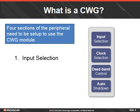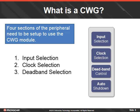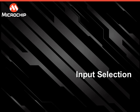Four sections of the peripheral need to be set up to use the CWG module: input selection, clock selection, deadband selection, and auto shutdown. Now let's look at the input selection.